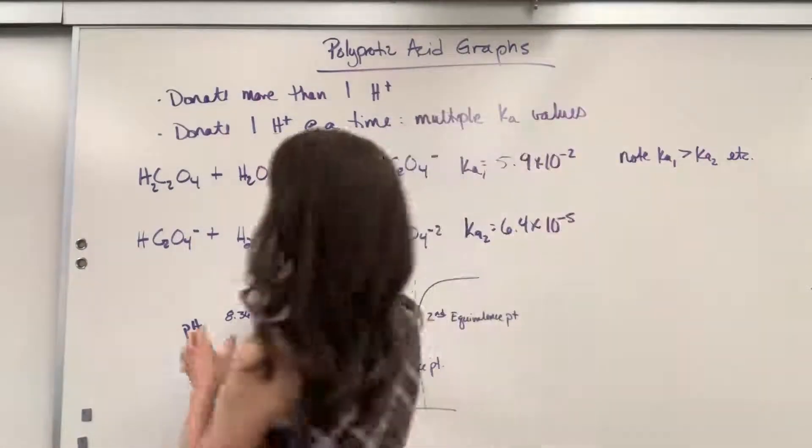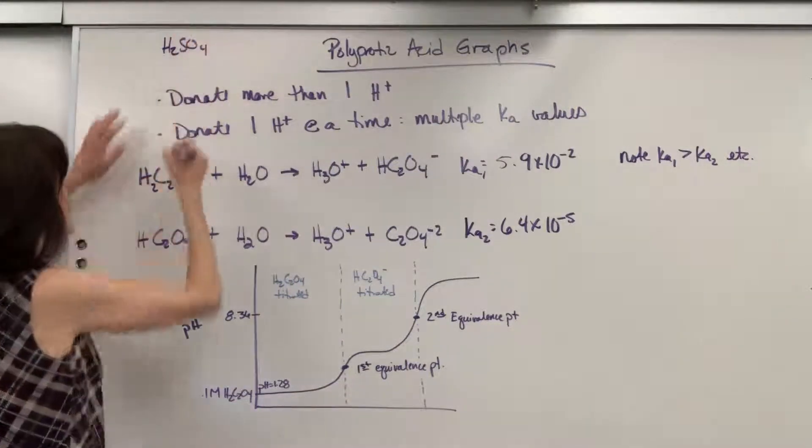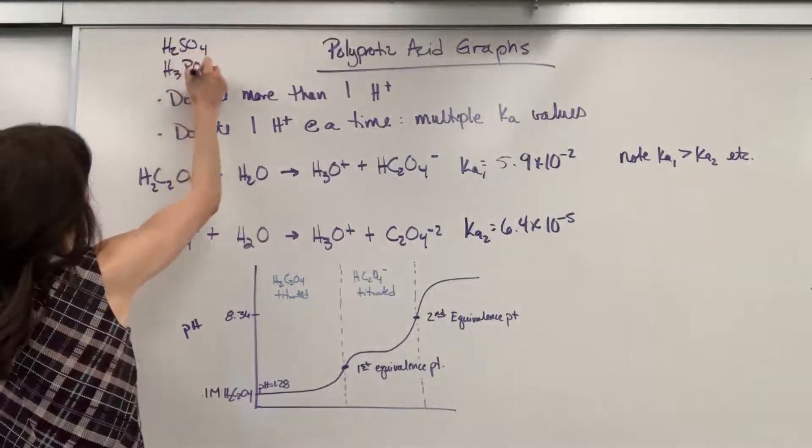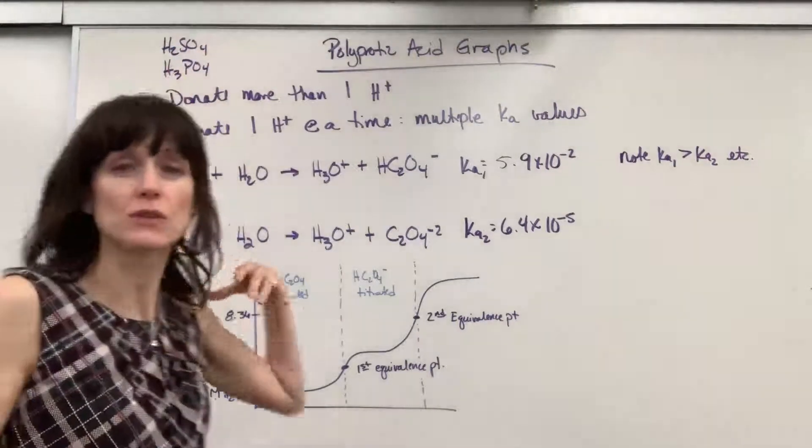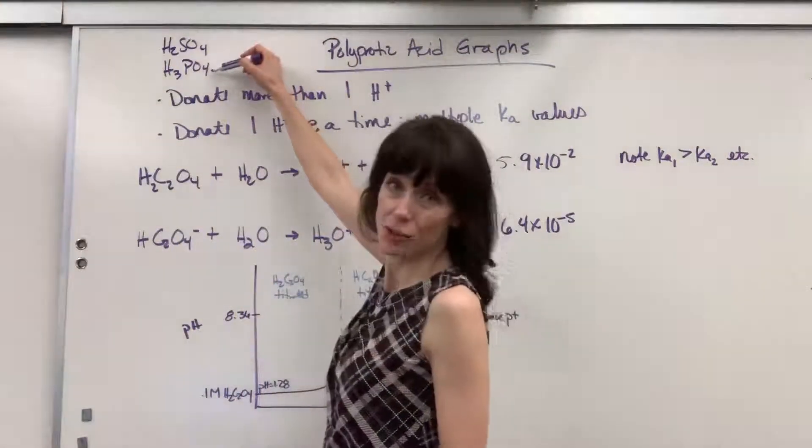For example, let me write a couple of examples here for you. We could have sulfuric acid, notice it has two hydrogens. I could have phosphoric acid that has three hydrogens, so this would be polyprotic acids. This would be diprotic, that's triprotic.